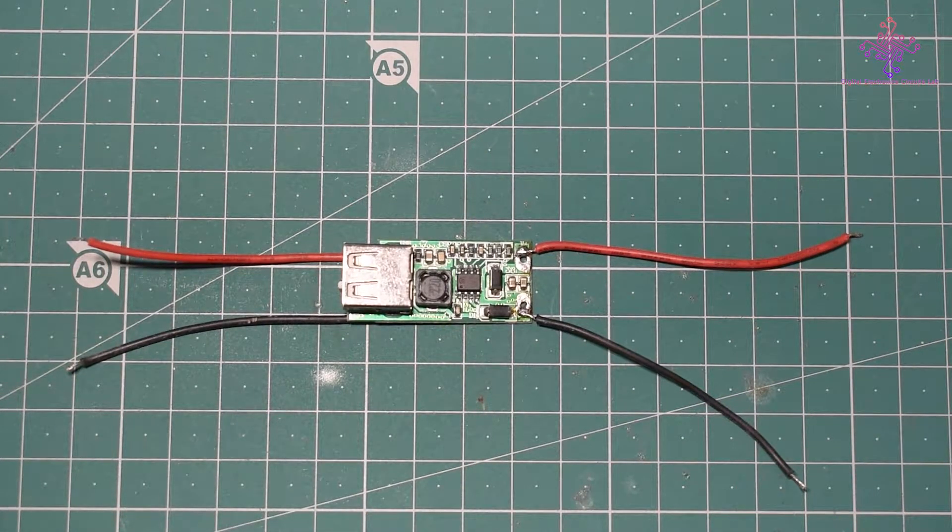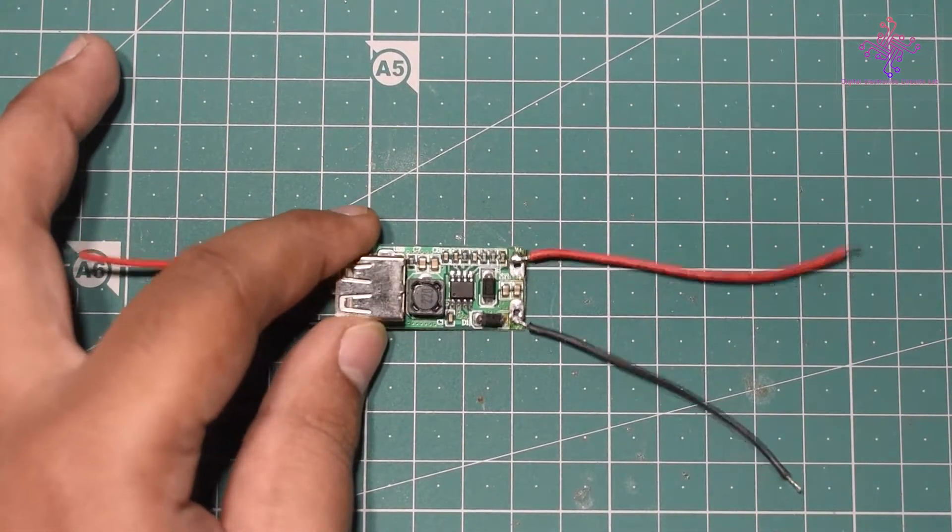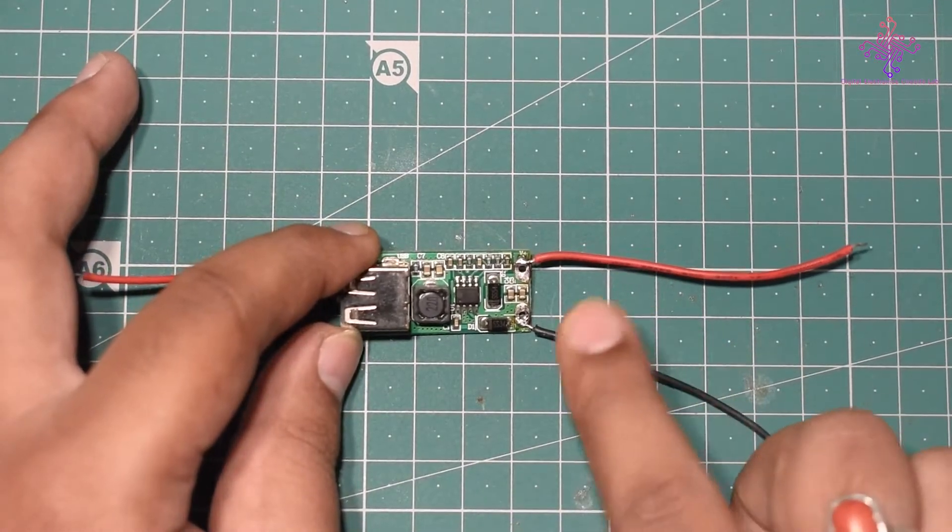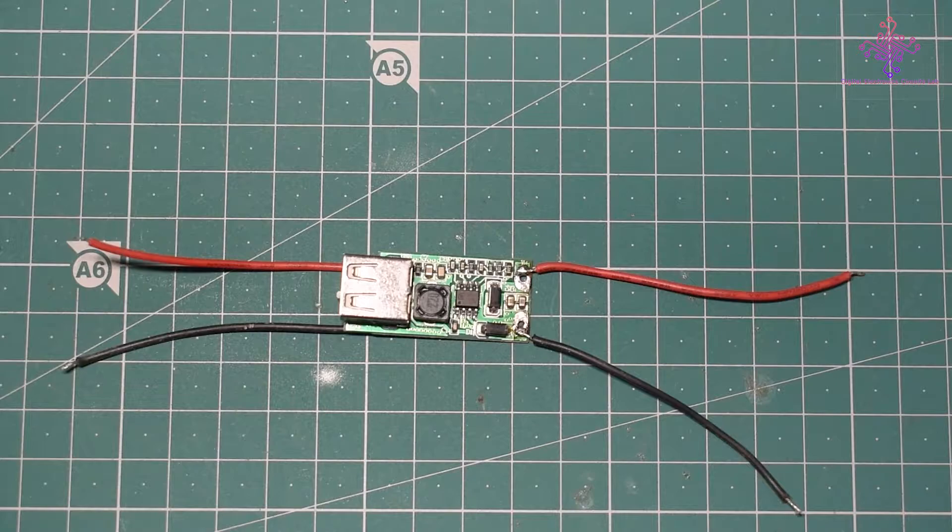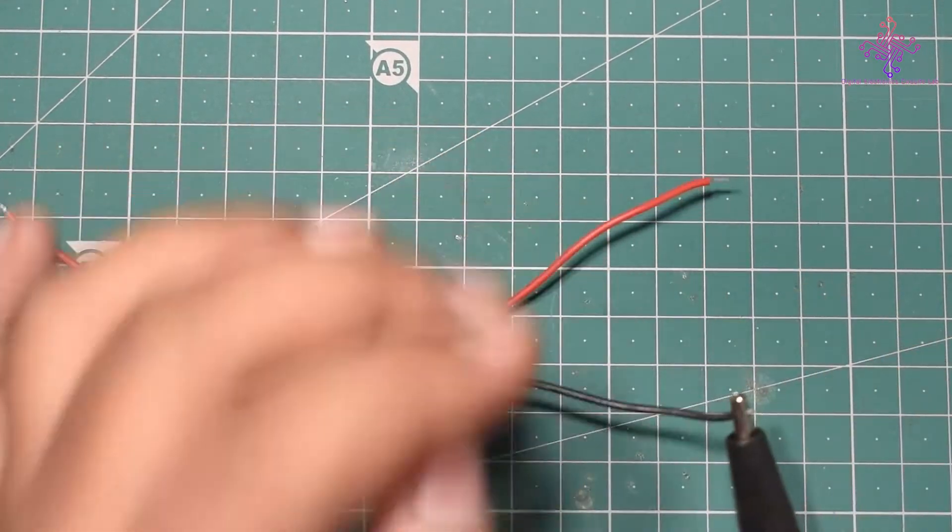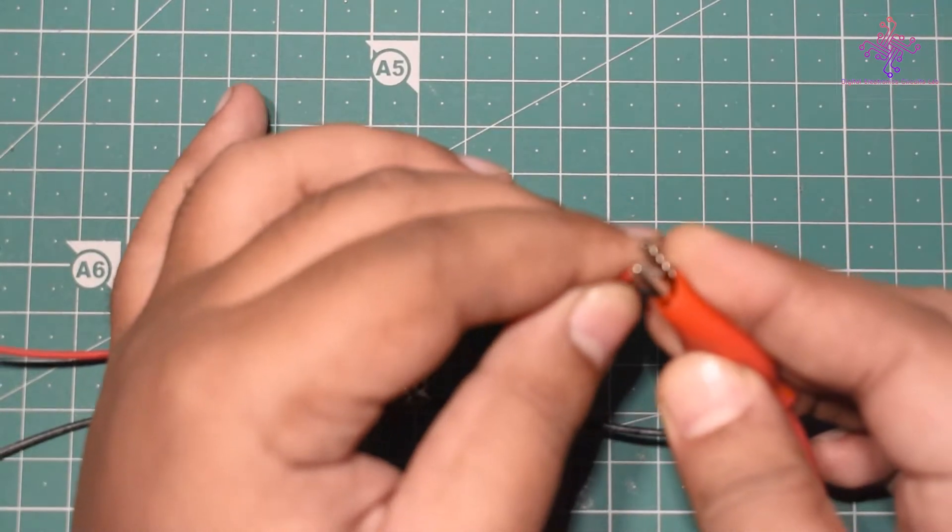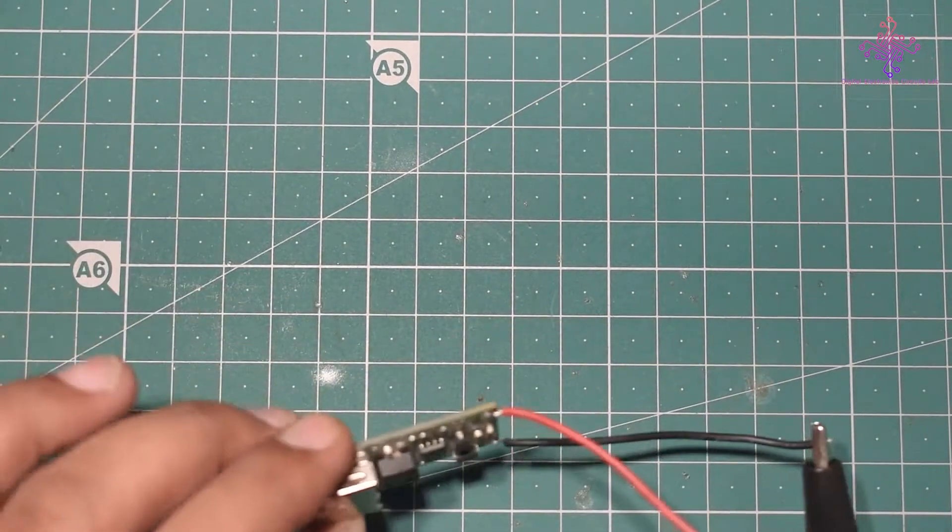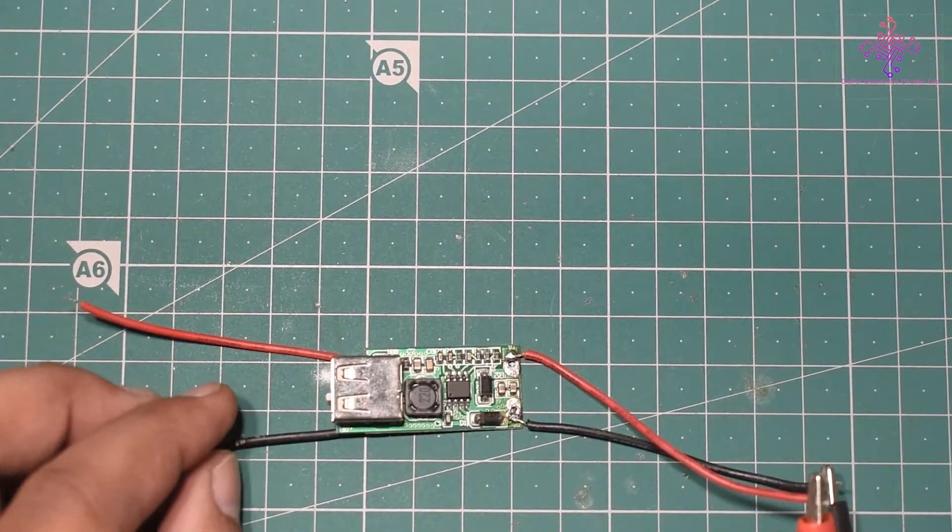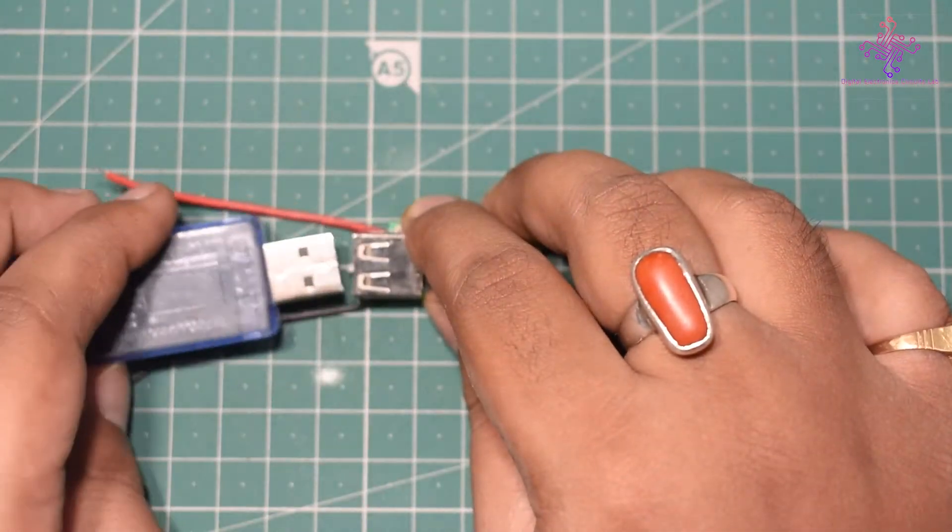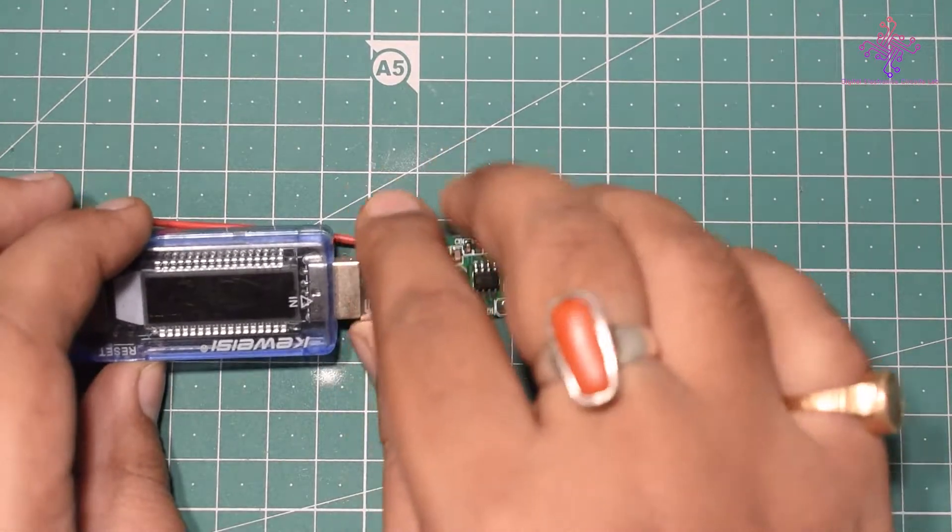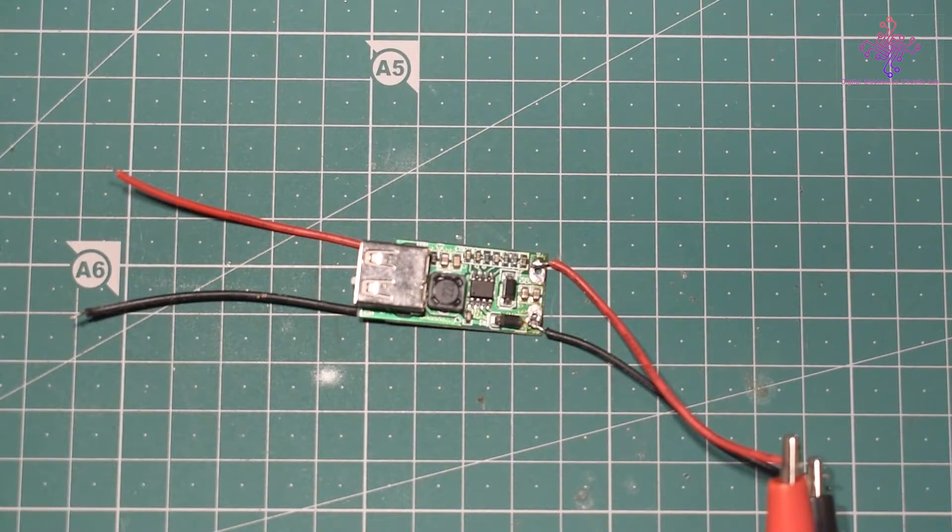Hello and welcome to this video. Today I have this little USB power module which I was using for my digital clock, but suddenly I figured out it has stopped working. It's not actually giving any output when I plug in power to the input. I have already soldered a couple of wires, and in this video I will be trying to fix this module.